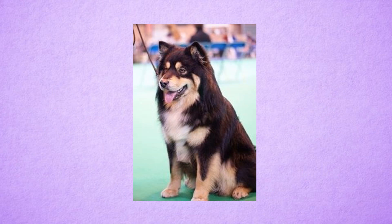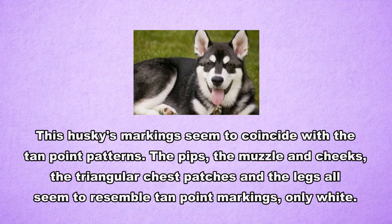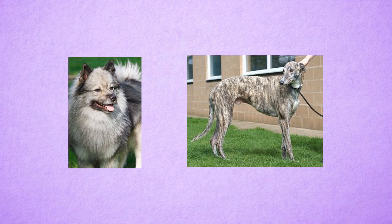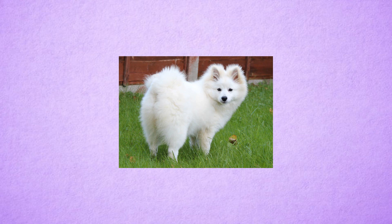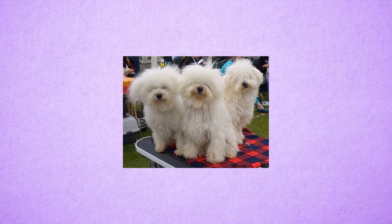The hypothesized I locus can lighten tan points without affecting the eumelanin, which can cause the tan points to look white. Huskies may have this as their white marks seem to match a typical black and tan marking but instead with white. The I locus can also affect sables and brindles, and there are many dogs that are almost completely white but have a creamy or ivory sheen to them. Breeds that commonly have this appearance are the Bichon Frise, the Samoyed, the American Eskimo, the German Spitz, the Maltese, the Bolognese, the Akita, the Shiba Inu, the Saluki, the Anatolian Shepherd, the Labrador, the Komondor, the Puli, and the Pekingese.